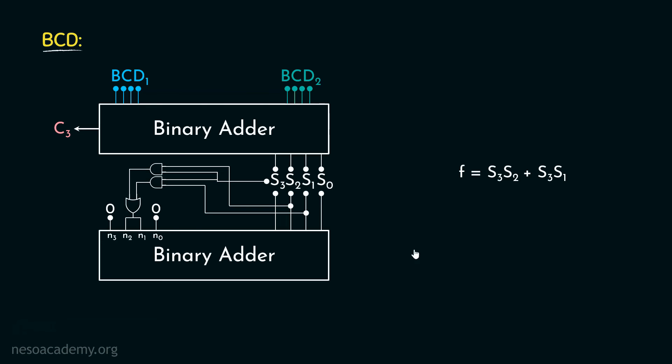So we need to modify our function like this. Say our final function will be F1. Now in F1, we will definitely have F and along with that, we will also have C3, that is this carry. So let's construct this. All we have to do is feed this carry into this OR gate. Now this circuit is complete.